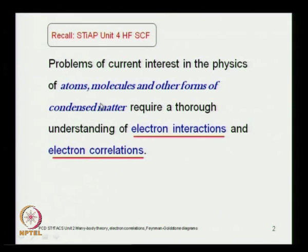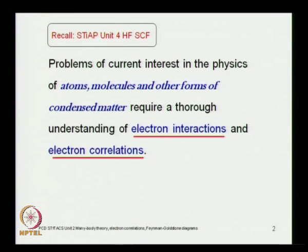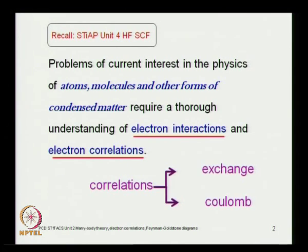Our interest in studying atoms, molecules, and condensed matter of any kind is in studying electron interactions and electron correlations, and how the many-body system responds to various probes like electromagnetic radiation or other particles — electrons, positrons, composite particles and so on. I have underlined the words 'electron interactions' and 'electron correlations' to draw attention to the fact that these two terms will have different connotations in our context. When I refer to correlations, I will be referring to two kinds: exchange correlations and Coulomb correlations.